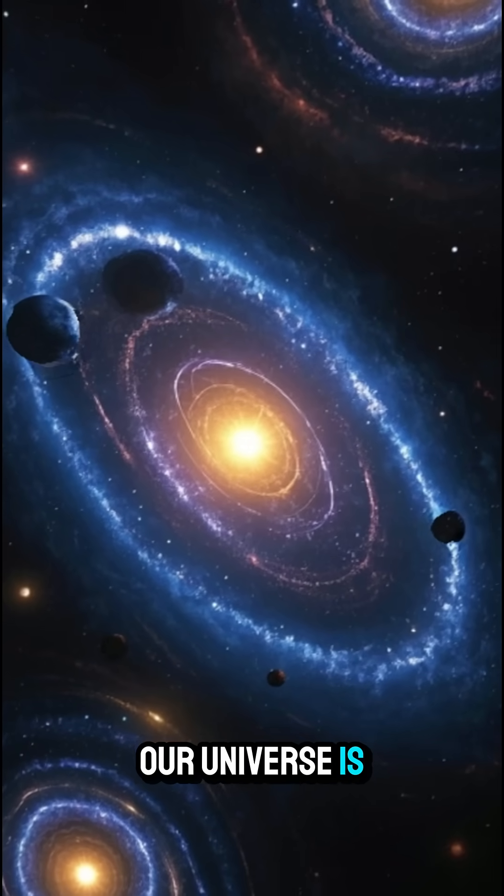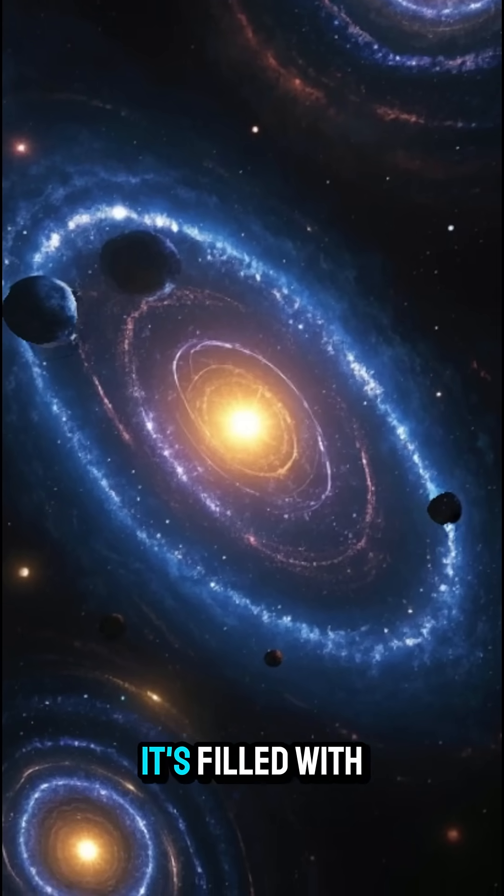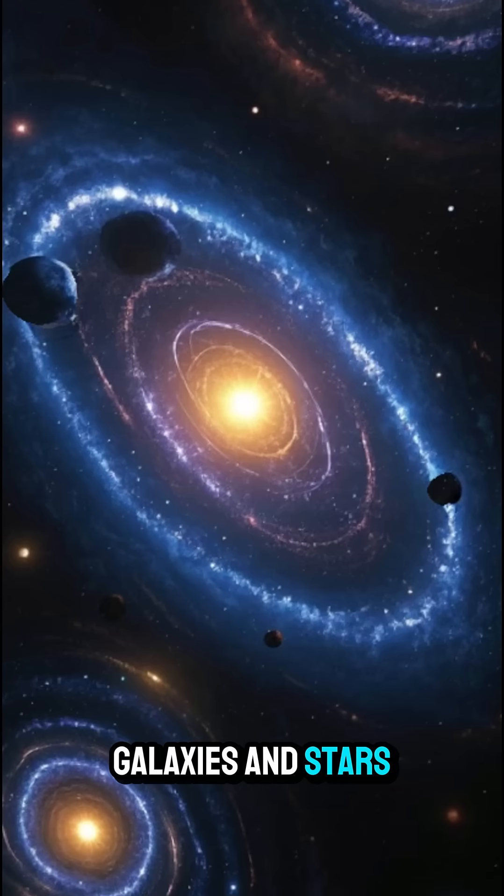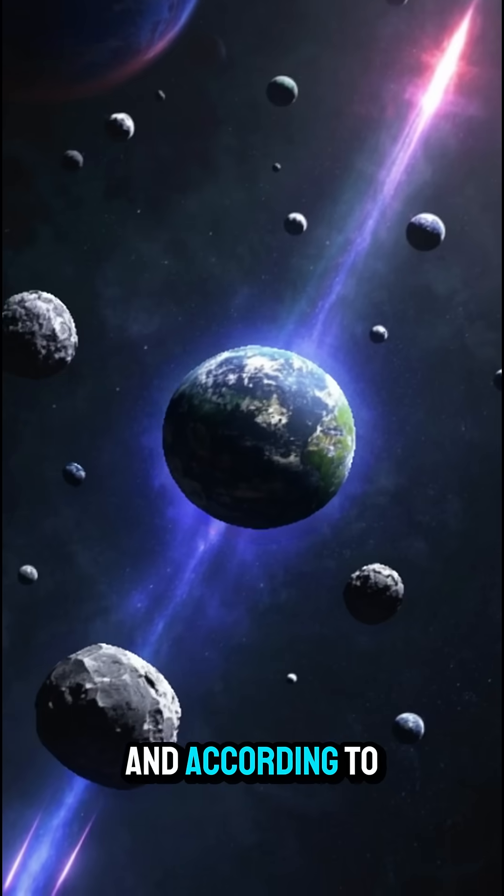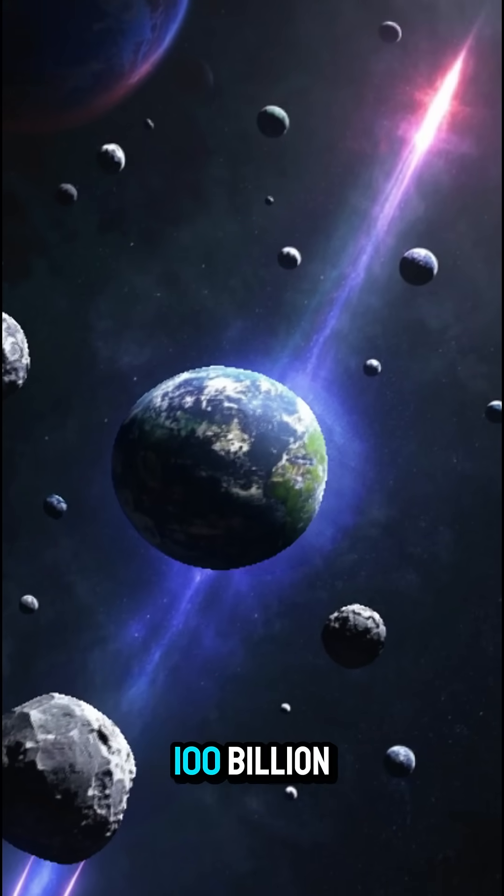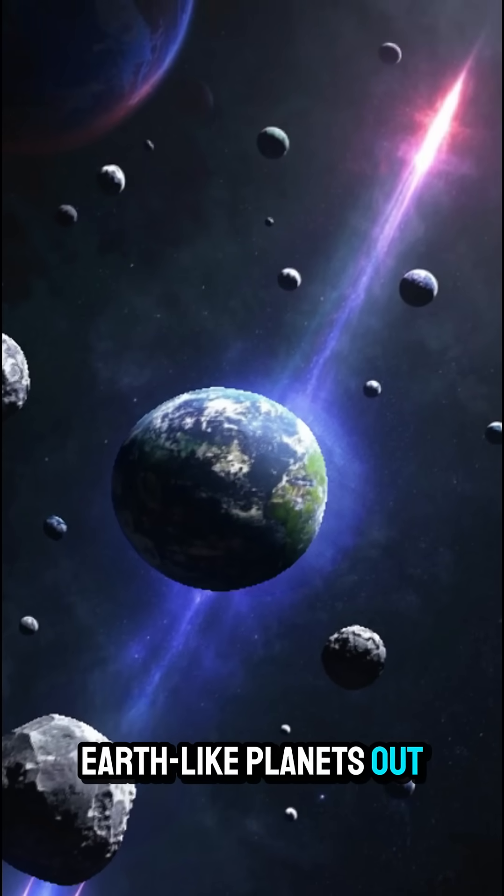You see, our universe is incredibly vast. It's filled with galaxies and stars and planets. And according to some estimates, there could be as many as 100 billion Earth-like planets out there.